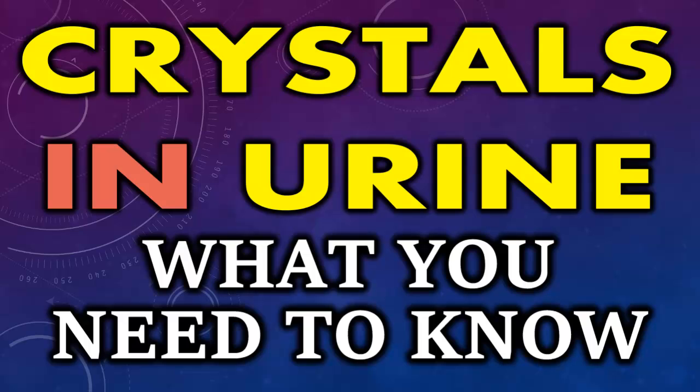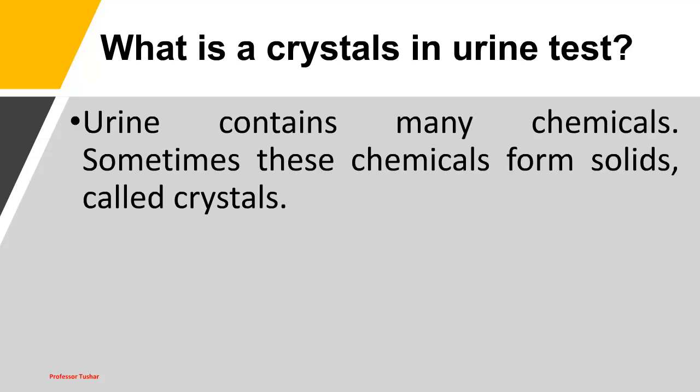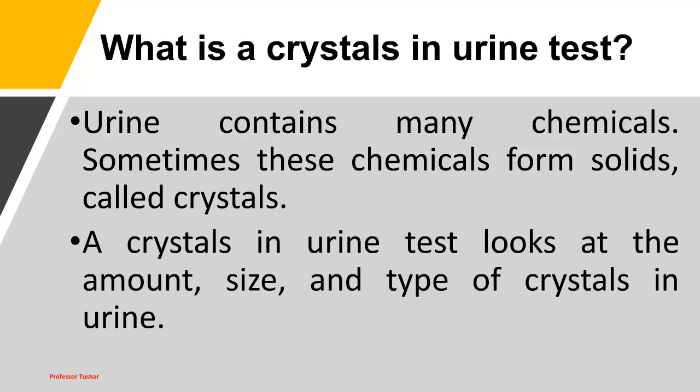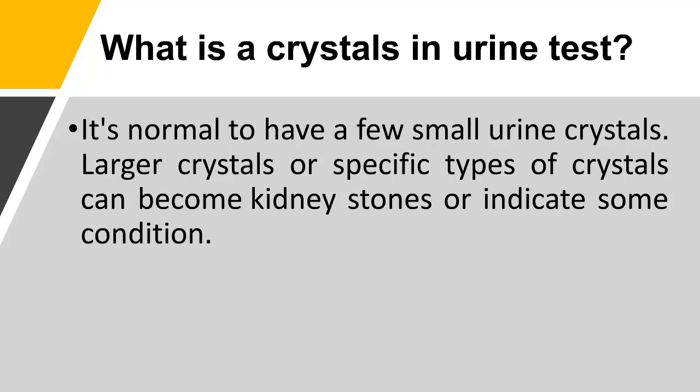Crystals in urine — what you need to know. A crystals in urine test looks at the amount, size, and type of crystals in urine. Urine contains many chemicals, and sometimes these chemicals form solids called crystals. It is normal to have a few small urine crystals. Larger crystals or specific types of crystals can become kidney stones or indicate some condition.